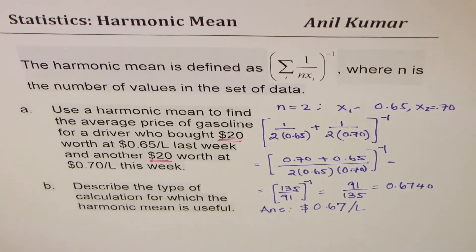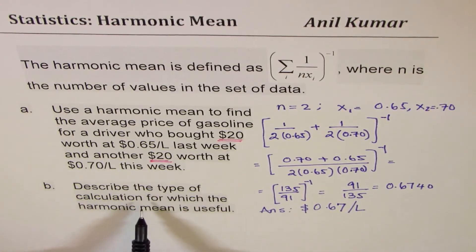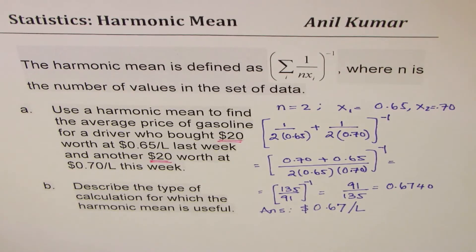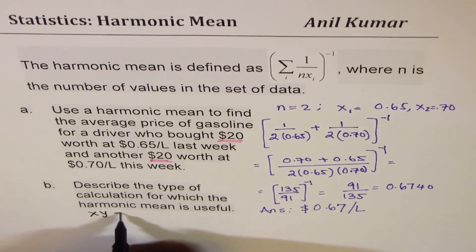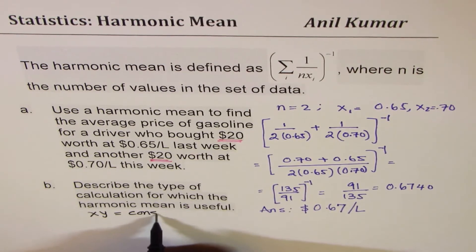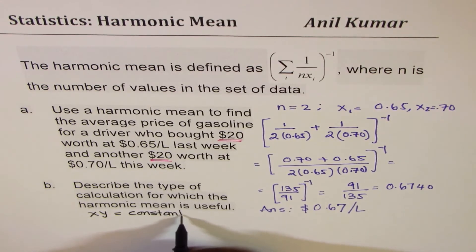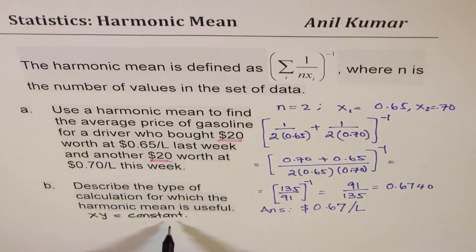Now, part 2 of this question is: describe the type of calculation for which harmonic mean is useful. Now, it is very useful, wherever we have something constant, like x times y equals to a constant. So, in these situations, it is very useful.